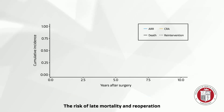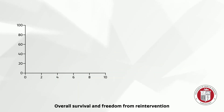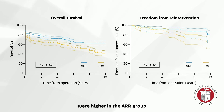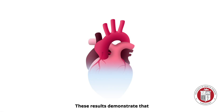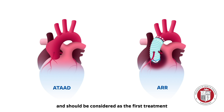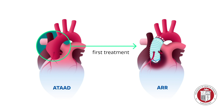The risk of late mortality and re-operation was similarly lower in the ARR group than in the CRA group. Overall survival and freedom from re-intervention were higher in the ARR group. These results demonstrate that aggressive root replacement is safe for ATAAD and should be considered as the first treatment when the aortic root is partially dissected or dilated.